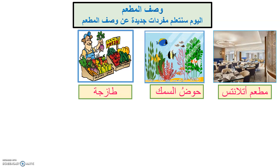الطعام طازج. For female words I will say طازجة, for example الفاكهة طازجة. For male words, الطعام طازج. طازج means fresh.